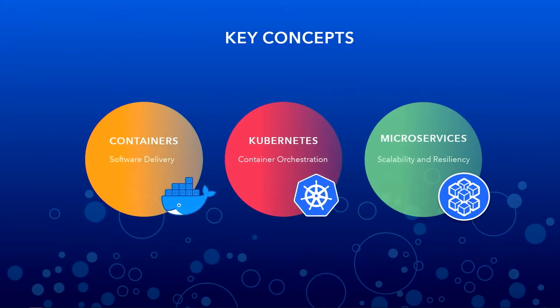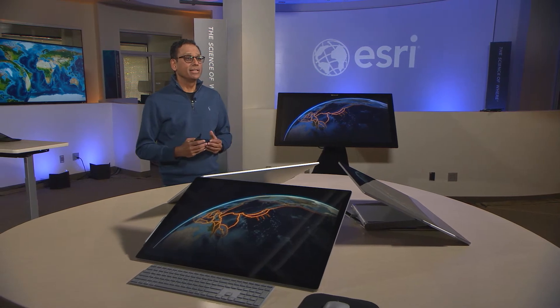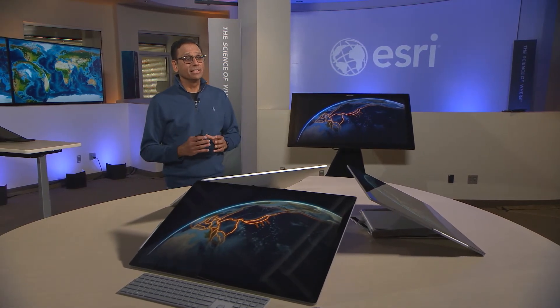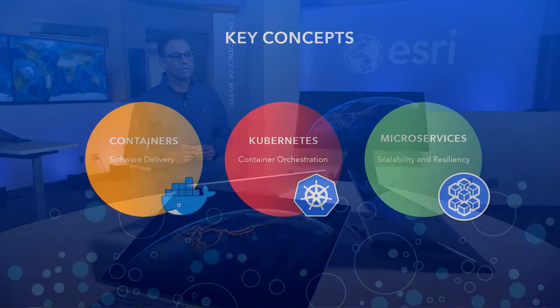There are three key concepts I want to introduce to you at this time about this offering. The first one is how we deliver the software itself. It's packaged as Docker containers made available via a Docker registry. These containers are very self-reliant — they are autonomous units that help with fast and consistent deployments and easy maintenance, too.